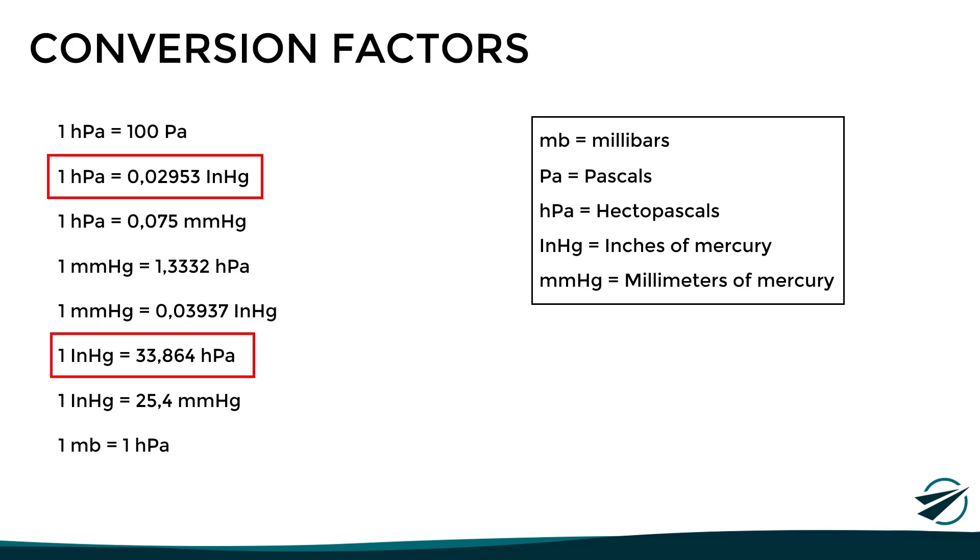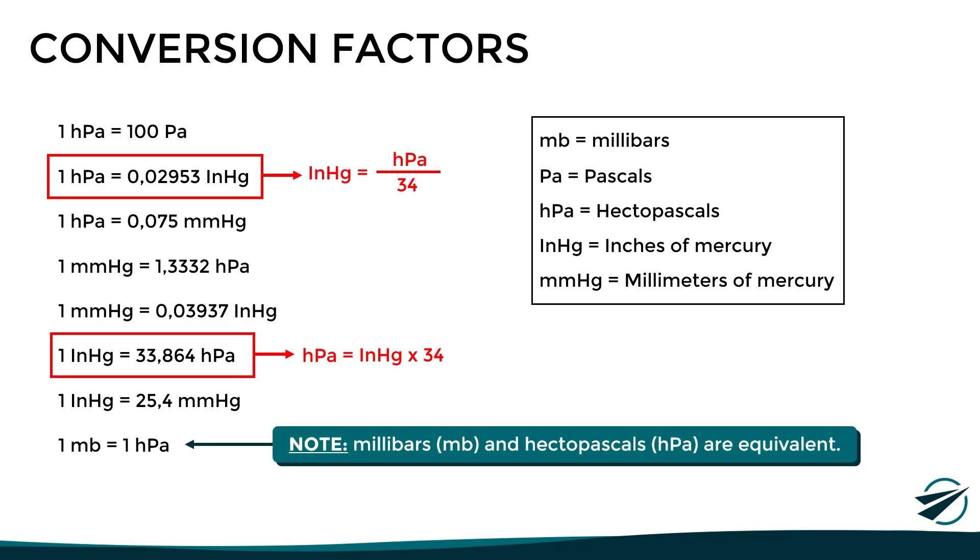And a general rule of thumb for quick conversions between these units is to divide by 34 to go from hectopascals to inches of mercury, or multiply by 34 to go from inches of mercury to hectopascals. Now, another thing to keep in mind is that in some cases, you will see the terms hectopascals and millibars used interchangeably. And this is because these units of measurement are equivalent. So there is no difference between using one or the other.